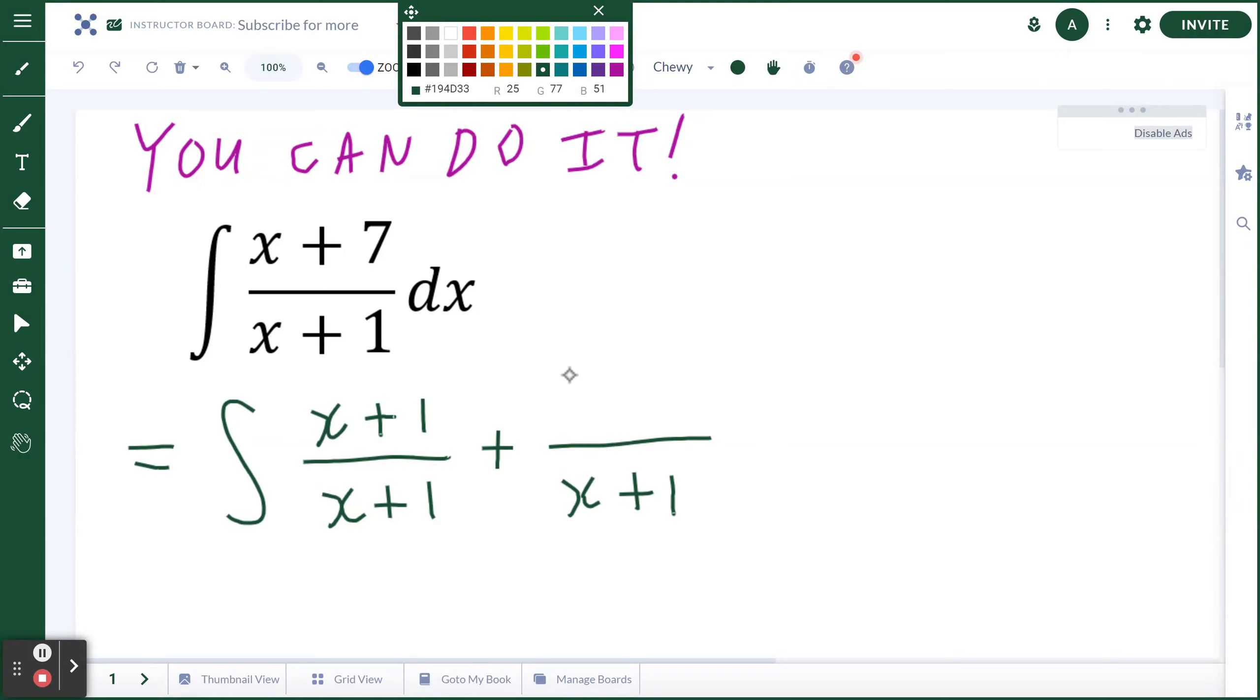Put a set of brackets, you're integrating this with respect to x. So really (x+1)/(x+1) is going to be 1 plus 6/(x+1) in brackets, again integrating it with respect to x.